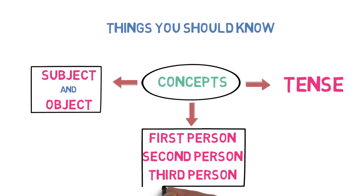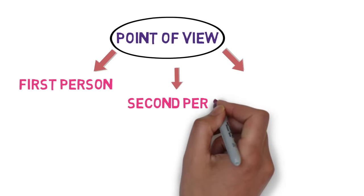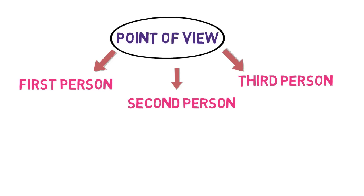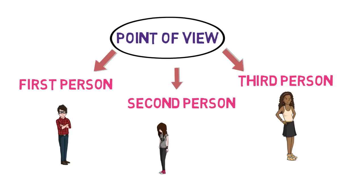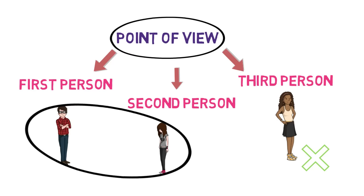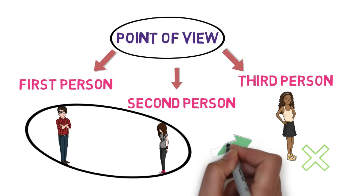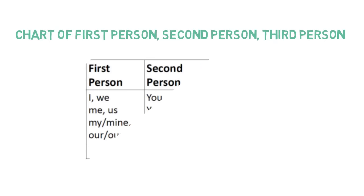Now let's understand what is first person, second person, and third person. For that, we need to understand point of view. Basically, there are three points of view in English. If Ravi and Isha are in the room and Ravi is telling something to Isha about Nikita, who is not present in the room, then Ravi is the first person as he is the one speaking, Isha is the second person as she is the one listening to Ravi, and Nikita is the third person as she is not present while they were talking. Ravi may be talking to Isha like this: 'I am telling you that she is very beautiful.' For a complete chart of first person, second person, and third person, please refer to this image.